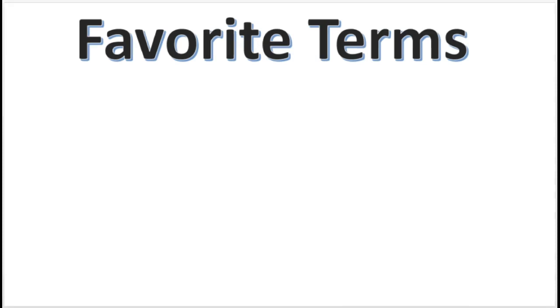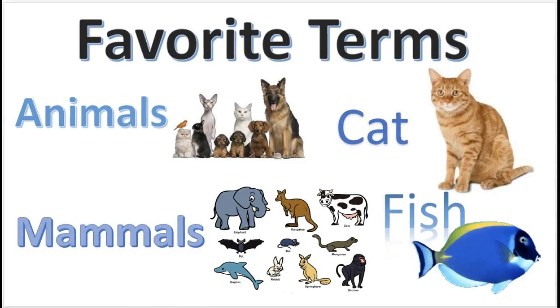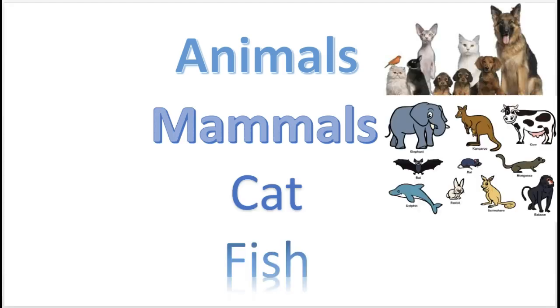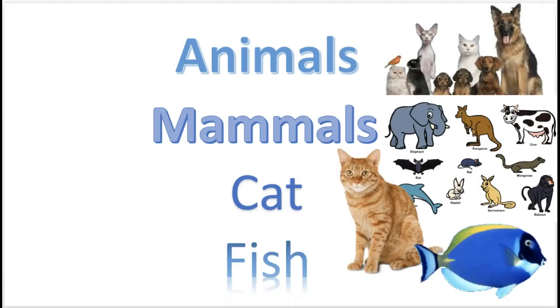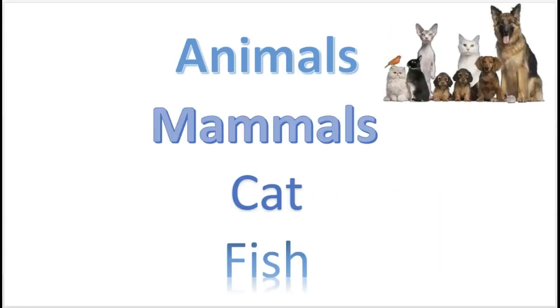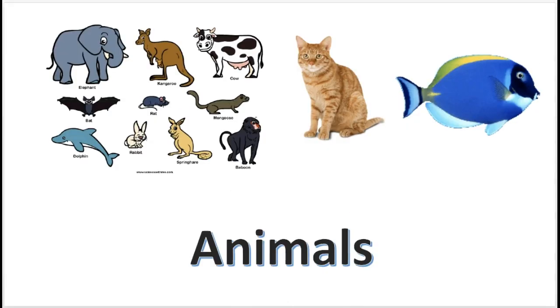Here are some of my favorite terms to use, and you can remember them quite easily: animals, mammals, cats, and fish. I remember it by these rhymes — animals, mammals, and a catfish, like a cat with whiskers. So you've got animals, mammals, cats, fish. Also, just so everybody's clear on what these terms mean: mammals, cats, and fish are all animals, but no fish are mammals.